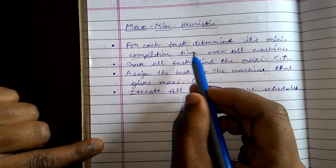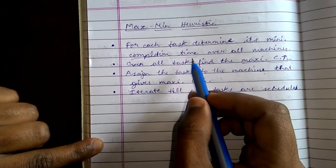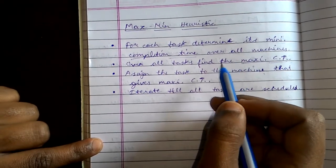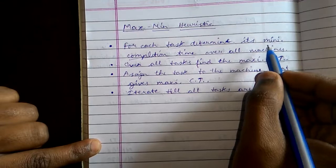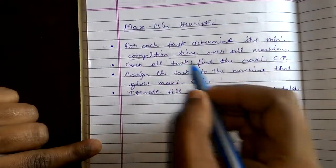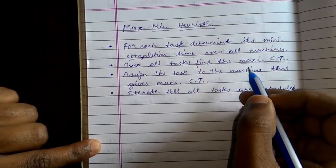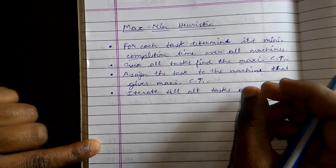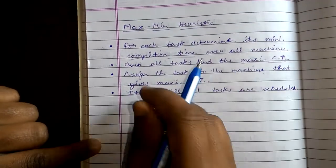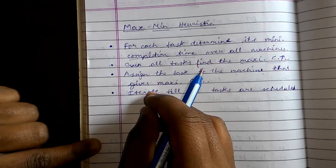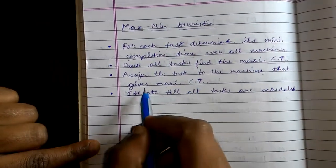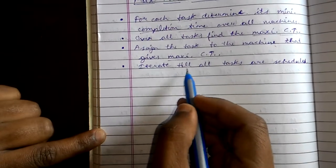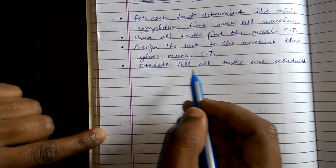In this we are given the tasks and the time by which they execute on different machines. We will find the minimum completion time for each task. Then we will see the maximum completion time that has been utilized by the machine. Then we will assign that task which has the maximum completion time to the machine. We will iterate till all tasks are scheduled.